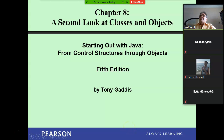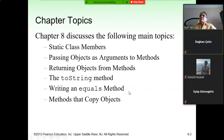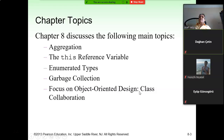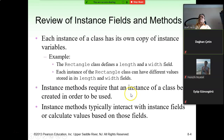Chapter 8. As mentioned before, we are following the book written by Tony Geddes. In this chapter we will discuss static class members, how to pass objects as arguments to methods, returning objects from methods, the toString method, the equals method, and methods that copy objects. We will also cover aggregation, the this reference variable, enumerated types, garbage collection, and object-oriented design class collaboration.